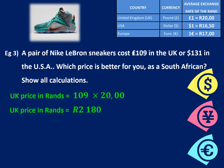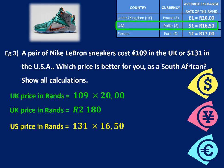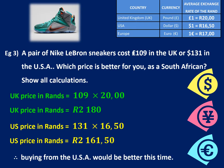Then in the US, that same pair of sneakers costs 131 US dollars. If every dollar costs 16 rand 50, then 131 dollars will be 131 times 16 rand 50, which comes to 2,161 rand and 50 cents. So the amounts are very, very similar — Nike probably does that on purpose. But for us in South Africa, it would be cheaper to buy from the USA at this time.